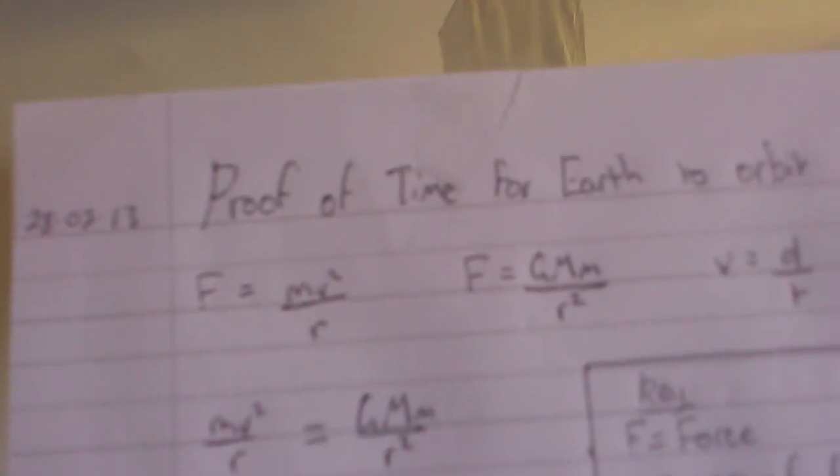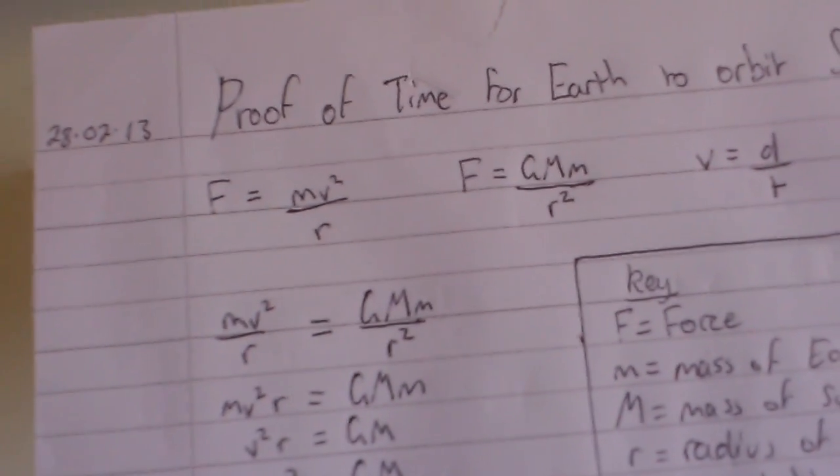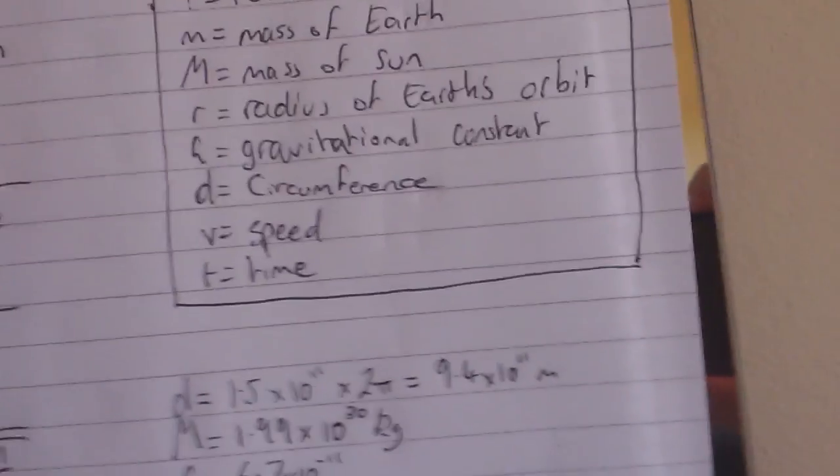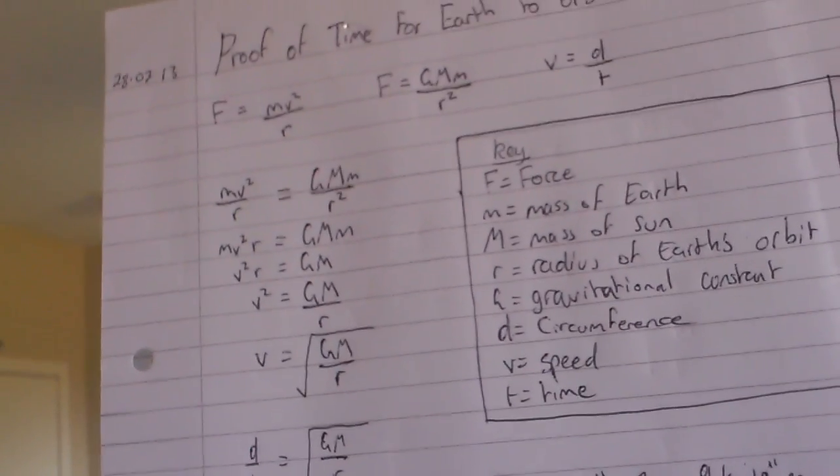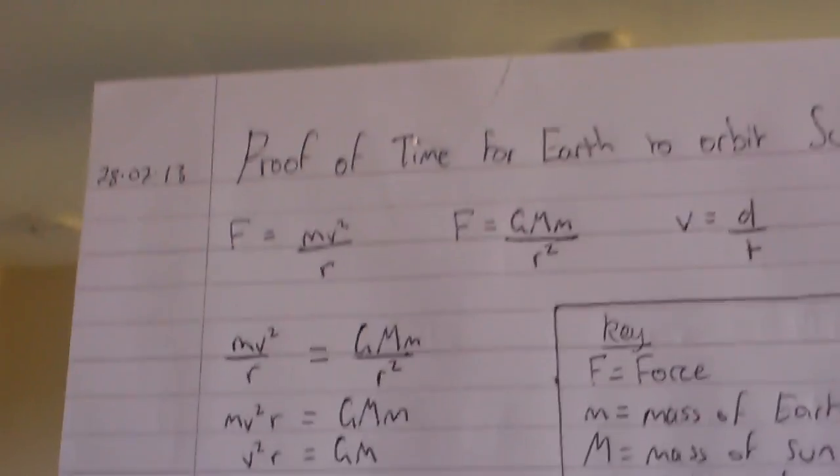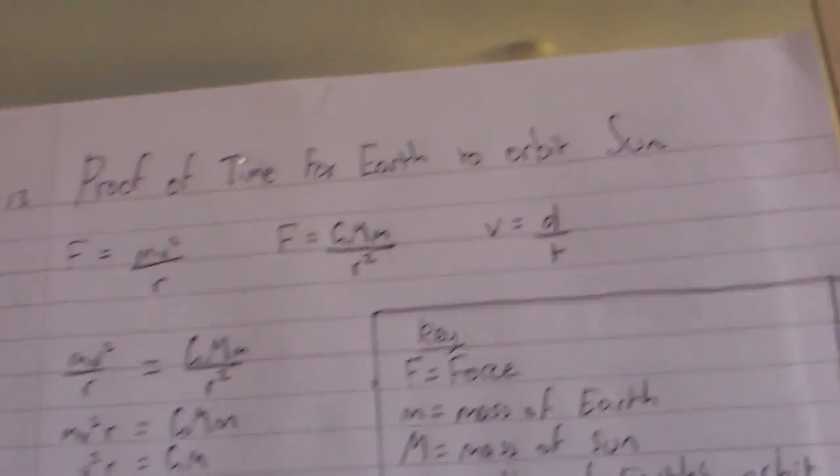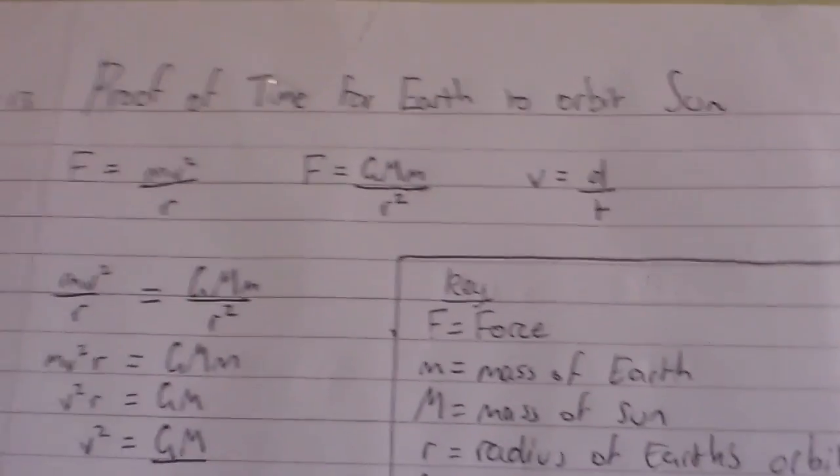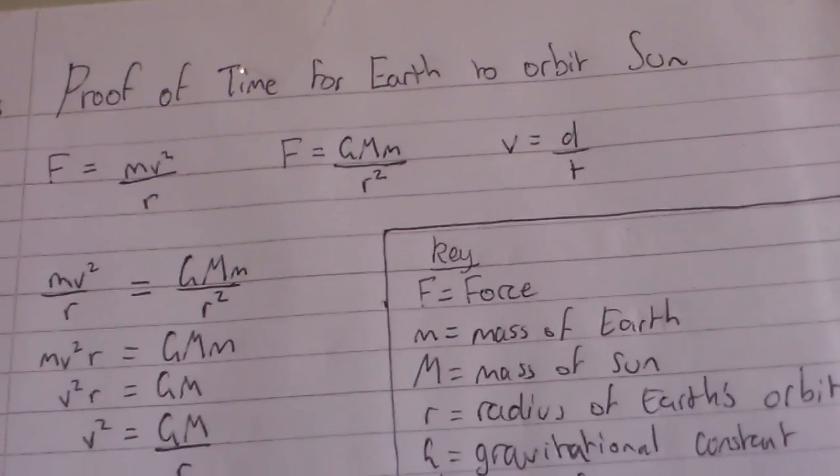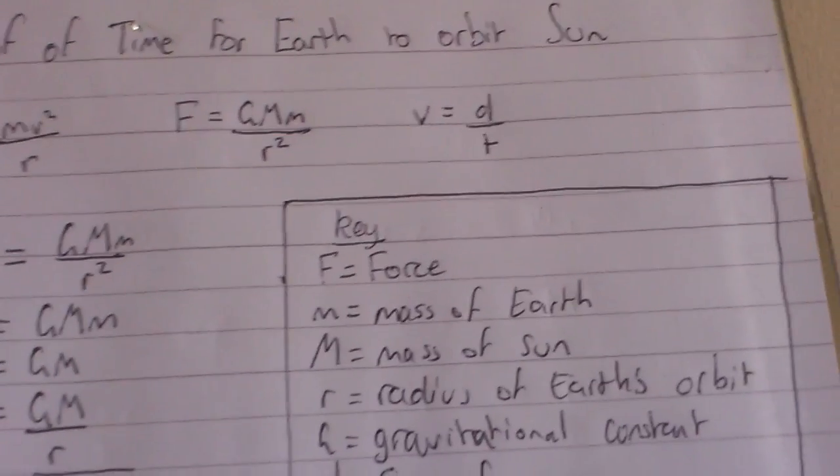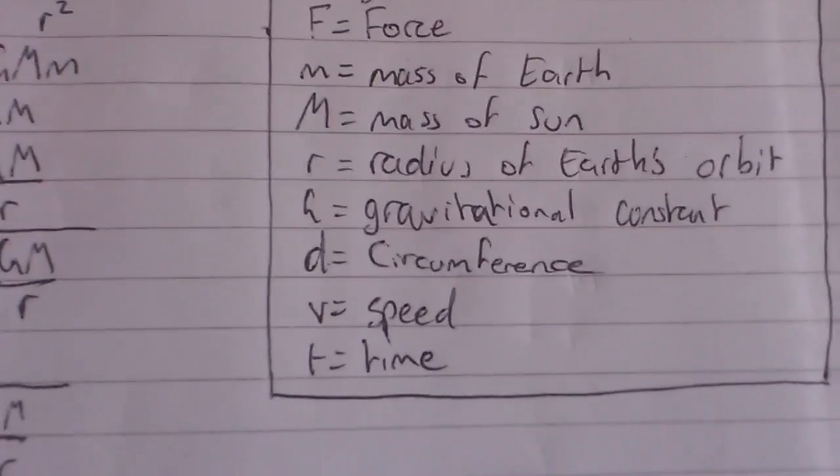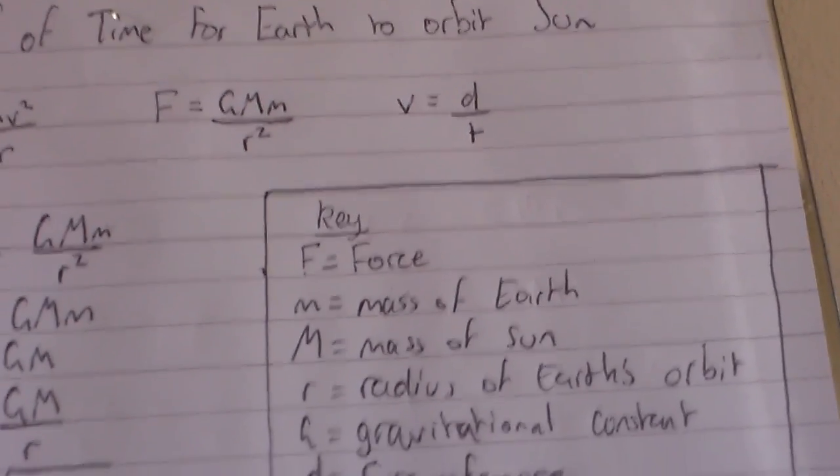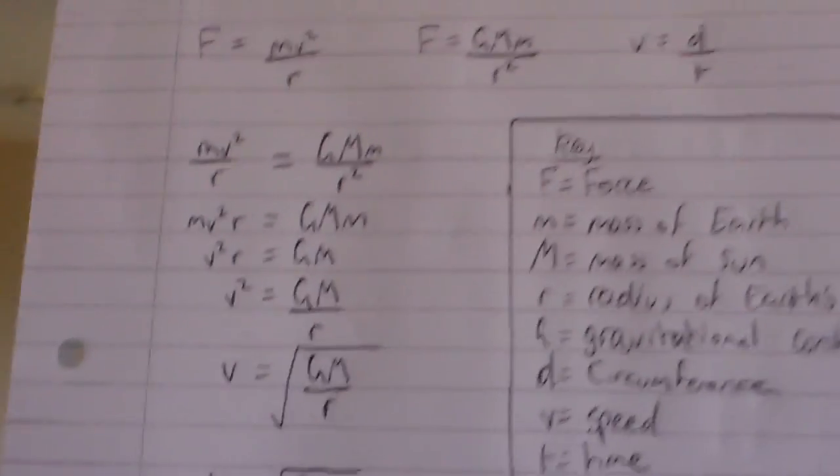So they have these three equations. Force equals the mass of Earth times the speed squared over the radius of the Earth. Force also equals the gravitational constant times the mass of the Sun times the mass of the Earth over the radius of the Earth squared. And the speed of the Earth's orbit equals the circumference of the Earth over the time, which is what you're trying to find out, the time it takes for the Earth to orbit the Sun.